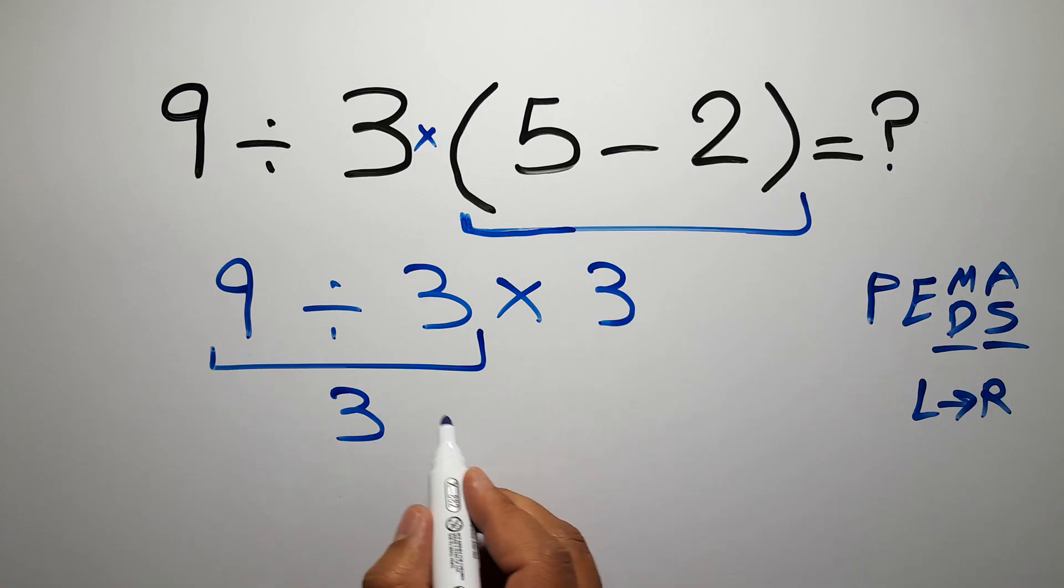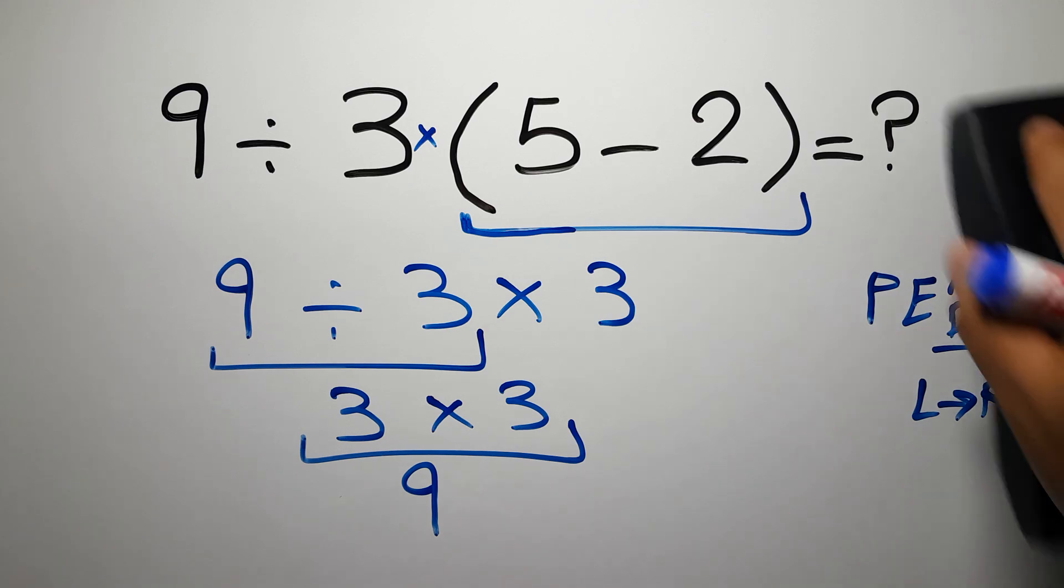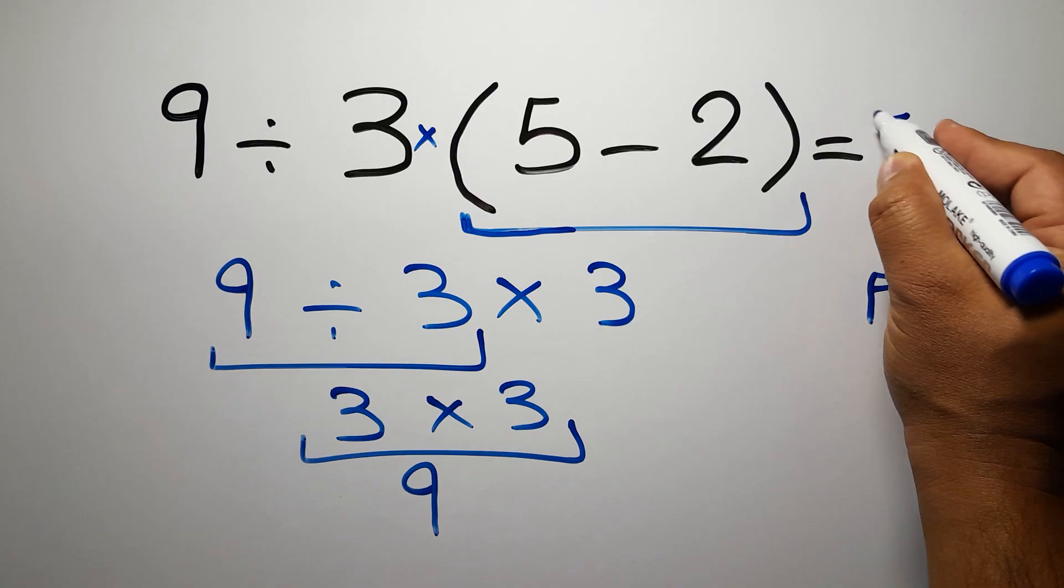And 3 times 3 equals 9. This is our final answer to this problem. The correct answer is 9.